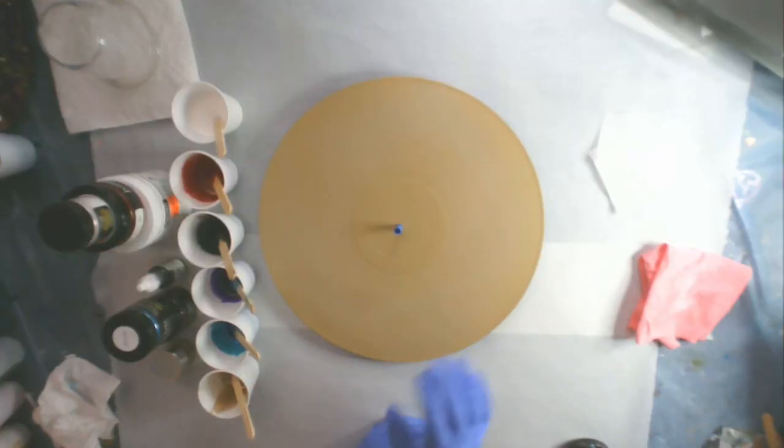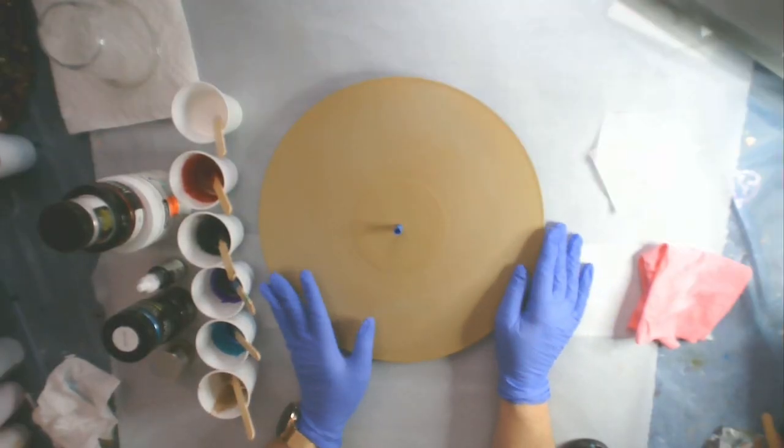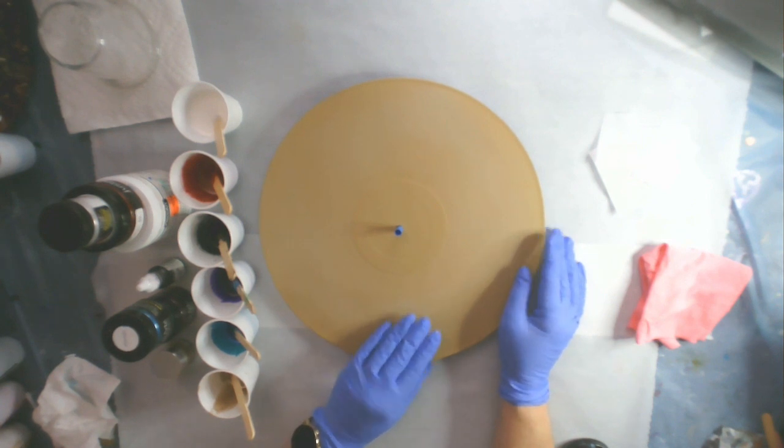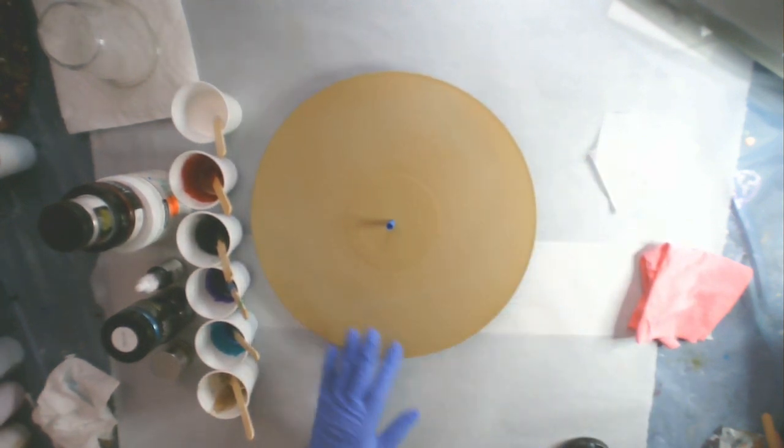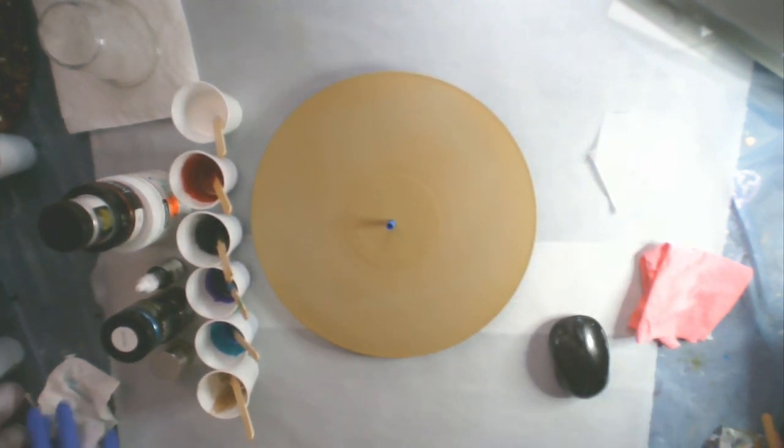I have this 12 inch vinyl record that I have already prepared by putting down a base coat of gold spray paint. I've taped the back of it and I got a piece of tape in the spindle hole here.